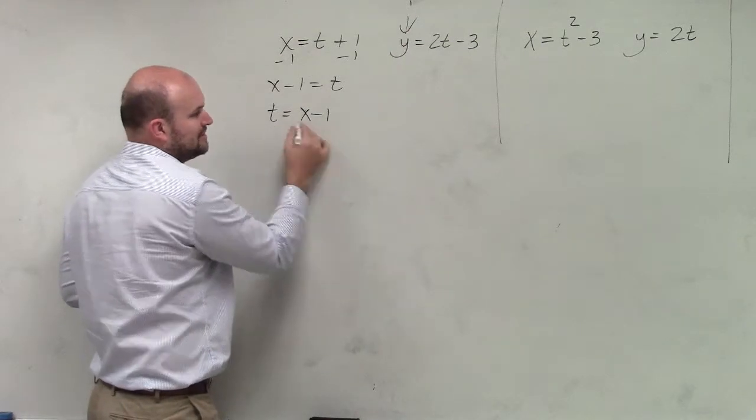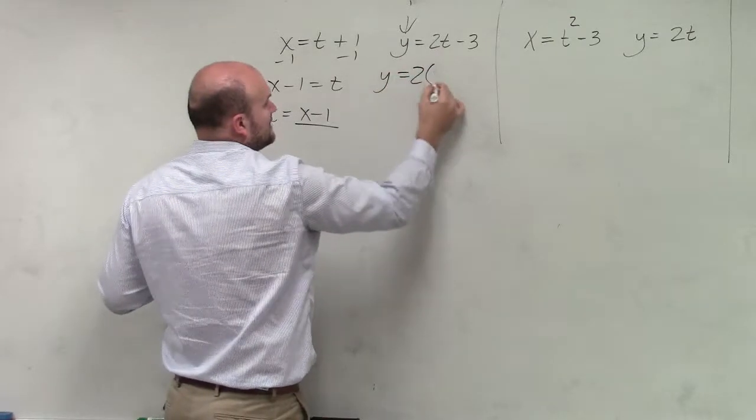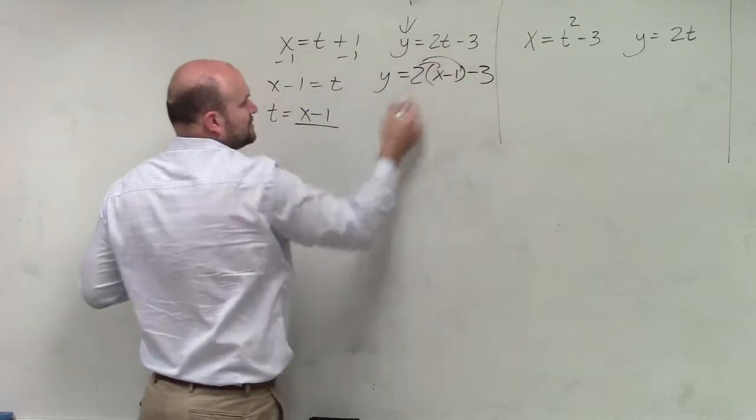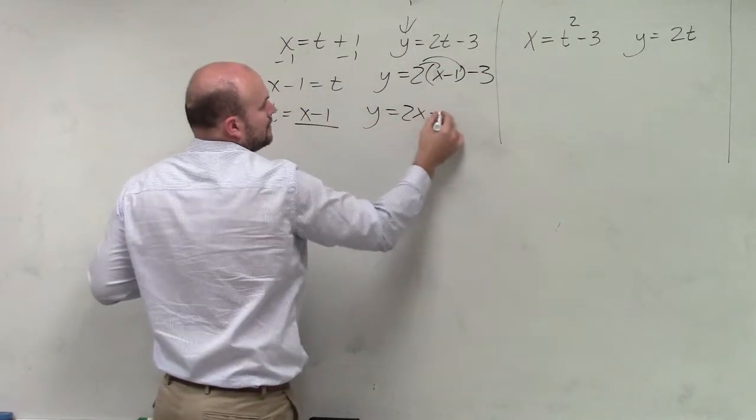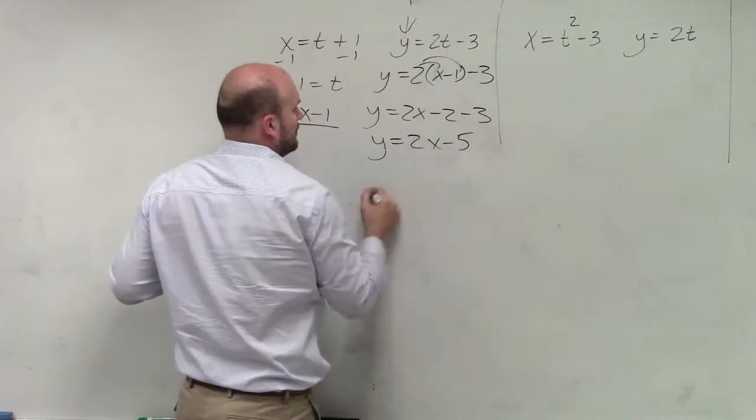Now, all I'm simply going to do is plug in that in for t. So y equals 2 times, what does t equal? x minus 1. Minus 3, apply the distributive property, done.